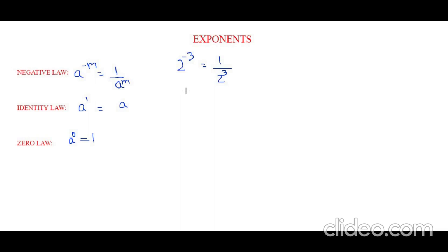Now let's take another example. 1 by 5 to the power of negative 2 can be written as 5 to the power of 2. So, there is a negative sign in the denominator, so it goes to the numerator as positive power. So, this is the negative law.